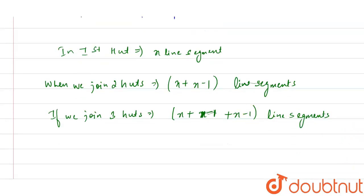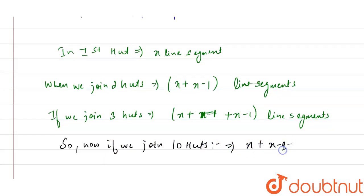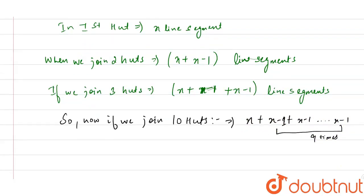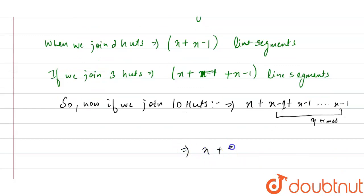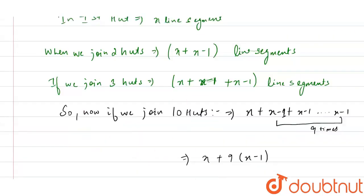So now if we join 10 huts in this pattern, we get x + (x − 1) + (x − 1) + ... up to (x − 1) nine times, because the first pattern consists of x line segments.